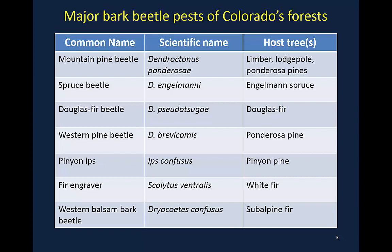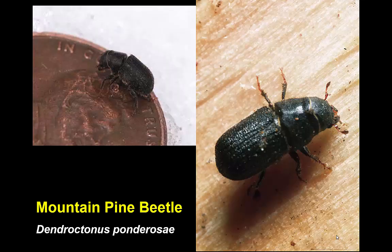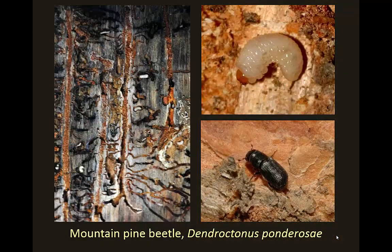Mountain pine beetle, Dendroctonus ponderosae, on its own is not a particularly interesting-looking insect and doesn't have a very fearsome appearance — it's quite a small beetle — yet it is capable of doing a tremendous amount of damage to its host plants. We see the adult in the lower right, a typical larva in the upper right, and the galleries it produces.